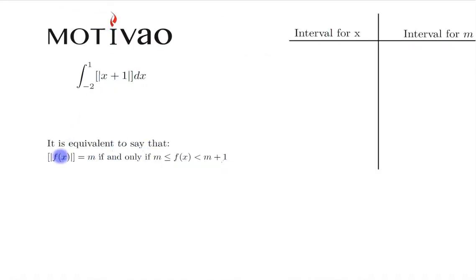It is equivalent to say that the floor function of f(x) equals an integer m if and only if m is less than or equal to f(x) less than m plus 1. Realize here that f(x) in this case is x plus 1.